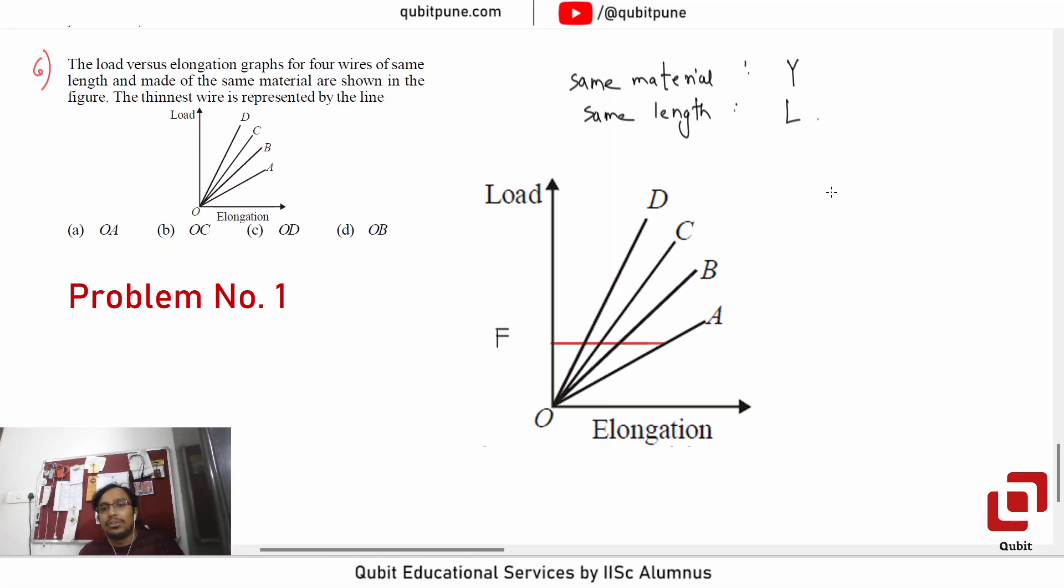Hooke's law says that delta L equals FL by AY. Now because we are taking the same load, F will be constant. Same material is there, so Young's modulus will be constant. Same length is there, so that part is also not going to matter.